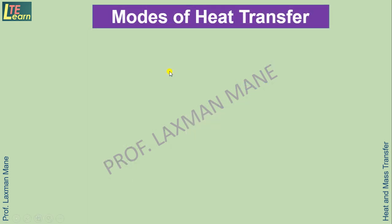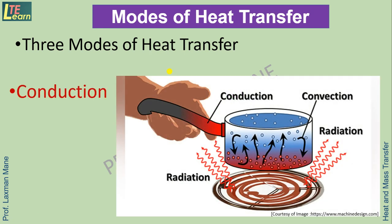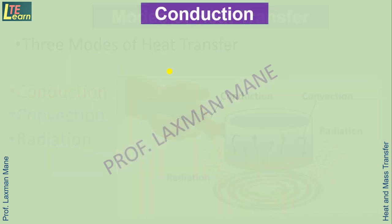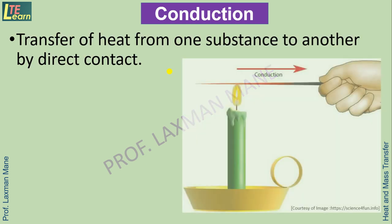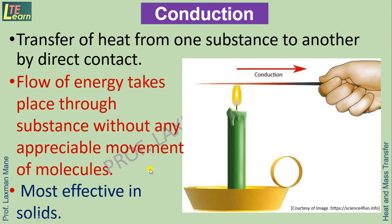There are mainly three modes of heat transfer: Conduction, Convection and Radiation. Transfer of heat from one substance to another by direct contact is called conduction. Here we can see a metallic rod held over a heating source. In this case, flow of energy takes place through a substance without any appreciable movement of molecules. Conduction mode is most effective in solids.